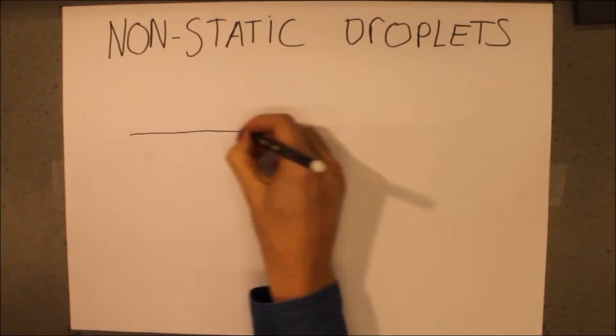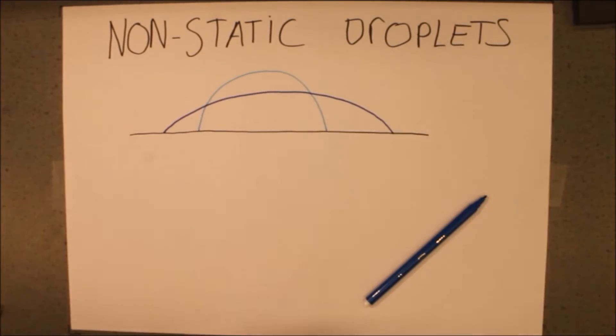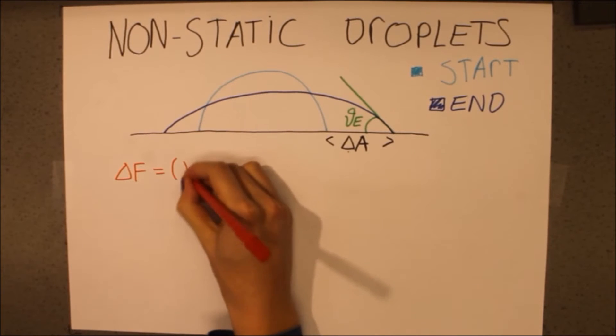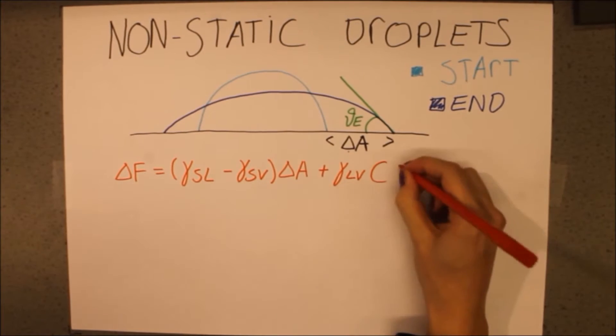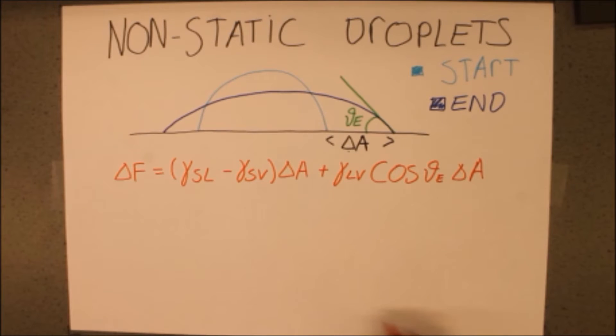When looking at non-static droplets, the droplet will spread out to its equilibrium state, giving rise to a displacement delta A. To analyze this case, we will calculate the change in free energy delta F. Recall that energy is calculated by multiplying force and displacement.